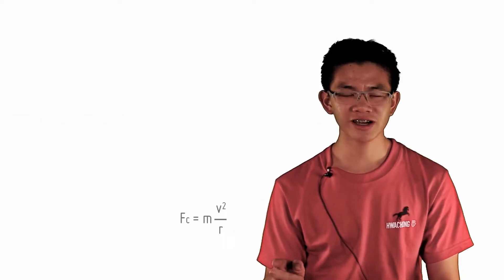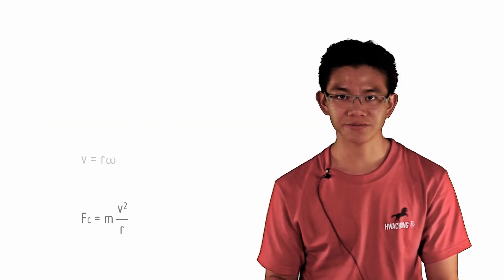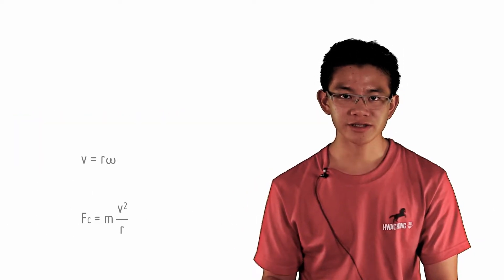Furthermore, as we derived earlier, v equals r omega. If we substitute it into mv squared over r, we get F equals mr omega squared.